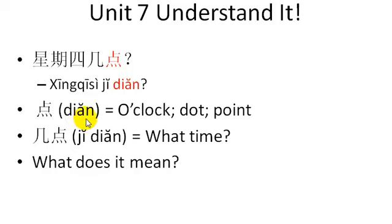So 点 means, or clock. Clock literally means daughter point, but it goes after the numbers 1 to 12 to mean 1 o'clock, 2 o'clock, 3 o'clock, etc. And you know 几 is used to ask how much or how many questions. So 几, like in 星期几, remember 星期几 is what day of the week is it. In this case, 几 goes before 点 to ask the question what time. So 星期四, 几点?